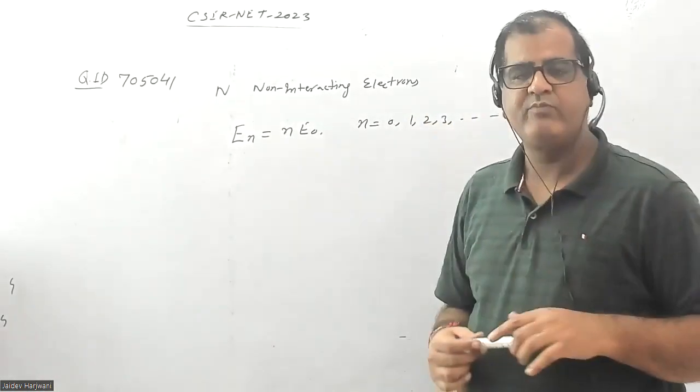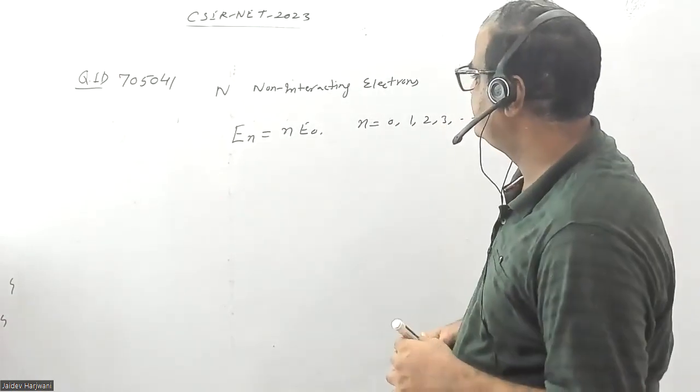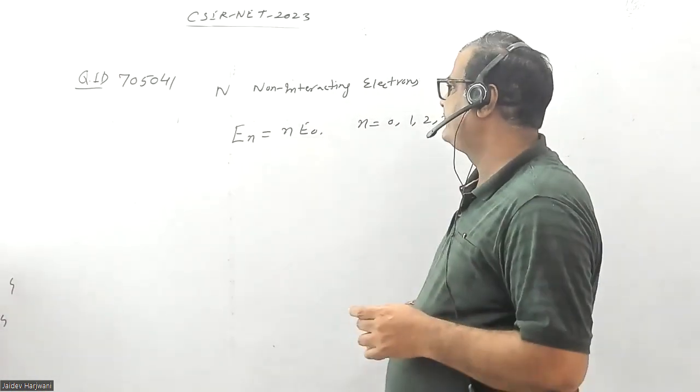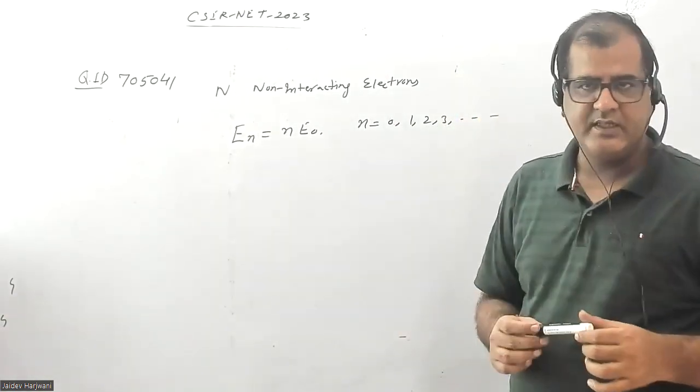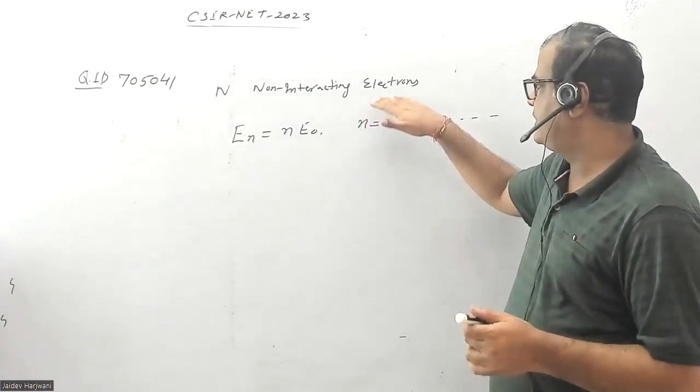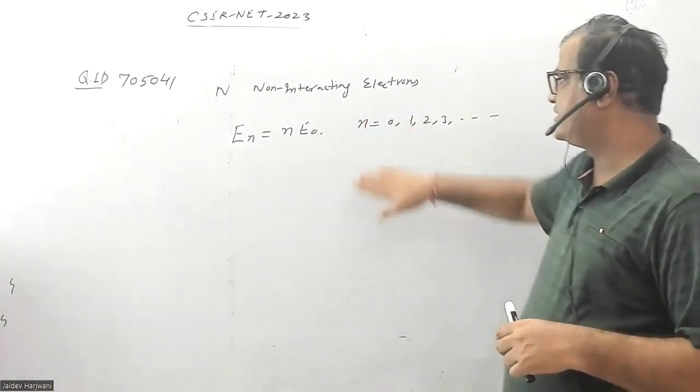Hello students, let us solve one more problem from CSIR NET 2023, question ID 705041. In this question, they have given you N non-interacting electrons. Electrons are fermions and their energy levels are given by this equation.